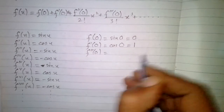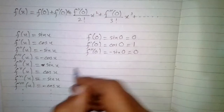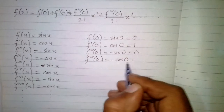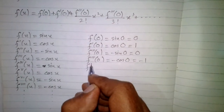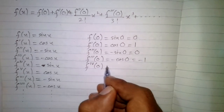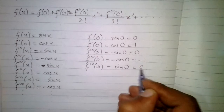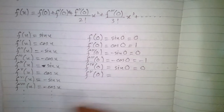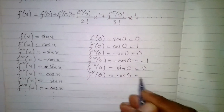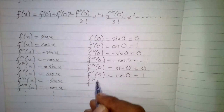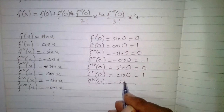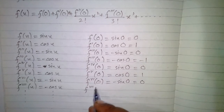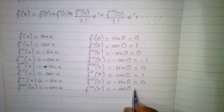f''(0) is equal to minus sine 0, and sine 0 is 0. f'''(0) is equal to minus cos 0; cos 0 is 1, so we have minus 1. Then f fourth of 0 is equal to sine 0, which equals 0. f fifth of 0 is cos 0, which equals 1. f sixth of 0 is minus sine 0, which is 0. And f seventh of 0 is minus cos 0; cos 0 is 1, so we have minus 1.